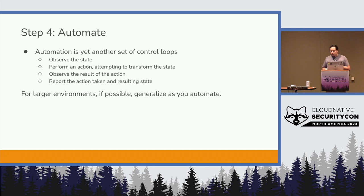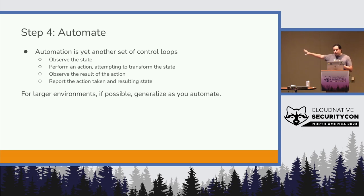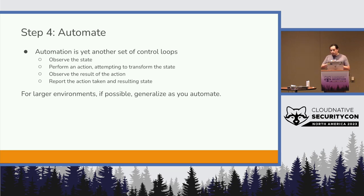Going back to automation: automation is a set of control loops that manipulate state — you observe the state, perform an action, observe the action, report on it, and repeat. When working on a larger environment, generalize what you're doing so it's not bound to your specific application. The initial time is expensive; the second time it's way cheaper; the third time you're basically getting it for free. It also gives a central place to update the system rather than updating each spoke. Be careful though — it also allows you to quickly roll out your mistakes — so get into good cultural habits of code reviews and testing.